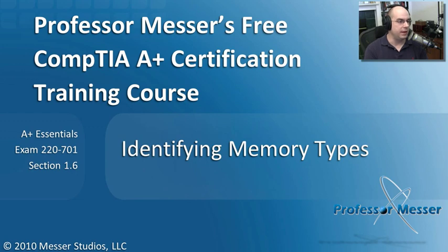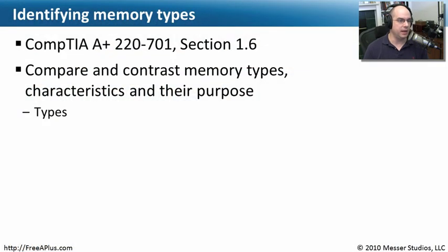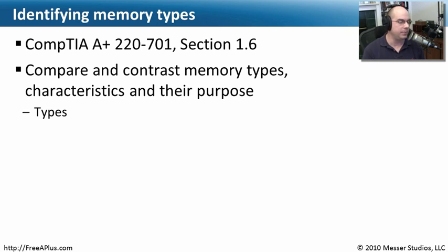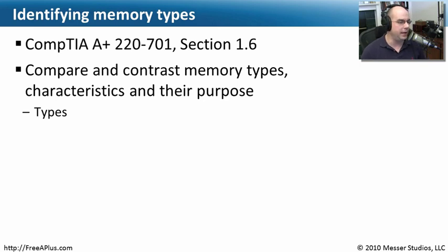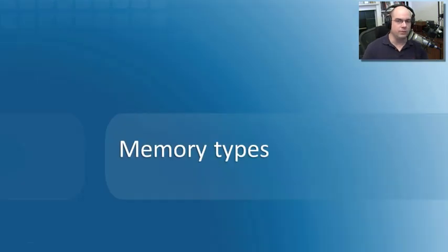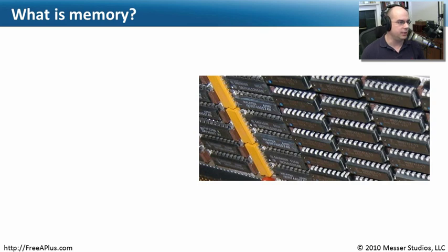Welcome to this module of Professor Messer's Free CompTIA A-plus Certification Training Course on Identifying Memory Types. I'm James Messer. In this module, we're going to step through the requirements of CompTIA A-plus 220-701, Section 1.6 — the Essentials Exam — which says we need to compare and contrast memory types, characteristics, and their purpose. Specifically, we're going to look at memory types. There's a lot to know, a little bit of math involved, but as long as you memorize one single formula, you should be fine with any throughput questions on your exam.